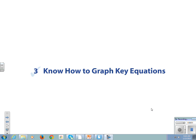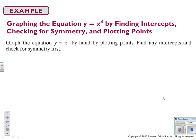Key equations. If I were to graph y equals x to the third by finding intercepts, checking for symmetry, and plotting points, we're going to use the symmetry to help us graph. So if we are going to plot it by hand, we want to find any intercepts and check for symmetry first.